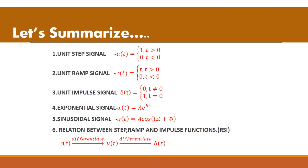Let us summarize. Unit step signal: u(t) = 1 for t ≥ 0, and 0 for t < 0. Unit ramp signal: r(t) = t for t ≥ 0, and 0 for t < 0. Unit impulse signal: δ(t) = 0 for t ≠ 0, and 1 for t = 0. Exponential signal: x(t) = A·e^(bt); depending on whether b is positive or negative, it is growing or decaying exponential. Sinusoidal signal: x(t) = A·cos(ωt + φ) — either sine or cosine wave. For the relations, remember R, S, I: r(t) on differentiation gives u(t); u(t) on differentiation gives δ(t).